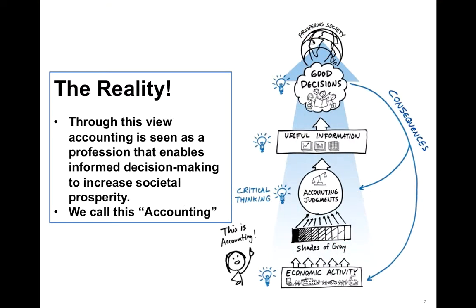In reality, accountants should be viewed as a profession that allows informed, effective decision-making, and we increase the prosperity of our society. It's all about economic activities, and there's no real black and white — you will see there are a lot of shades of gray. Accounting is about judgments and making decisions, not right and wrong answers. We provide good information for many important parties inside and outside of the company, and investors, lenders, managers, and employees make decisions that lead to a more prosperous society.